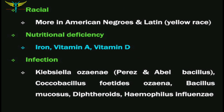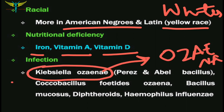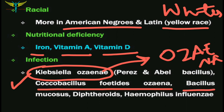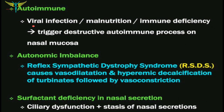Racially, atrophic rhinitis is most commonly seen in yellow people, whites, and also in American Negroes. Nutritional deficiencies leading to atrophic rhinitis include iron, vitamin A, and vitamin D. In infection, the most common organism seen in atrophic rhinitis is Klebsiella ozaenae, which produces foul green colored crusts in the nasal cavity. Other organisms include Coccobacillus foetidus ozaenae, Bacillus mucosus, diphtheroids, and Haemophilus influenzae.